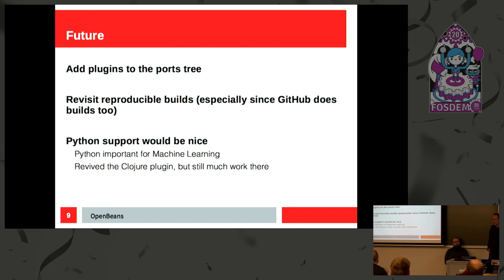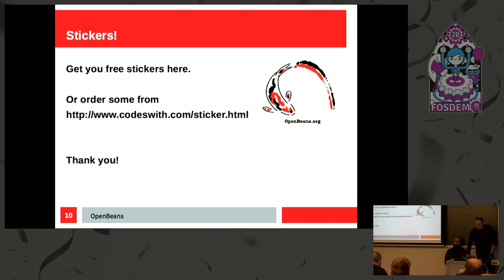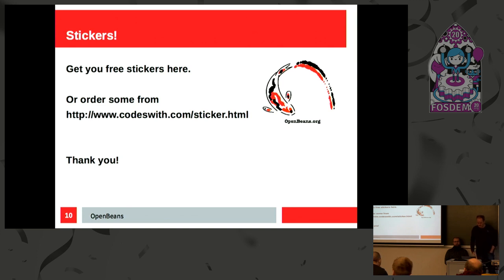In the future, a number of additional features could be added. One of these is Python — Python hasn't been donated yet to Apache. It's in the Oracle contrib repository and hasn't been included yet, so that's also a next step and something that could be included in this distribution as well. Also, a nice feature is you can get free stickers. If you go to the website codeswith.com/sticker, you can order a sticker and you get it for free.